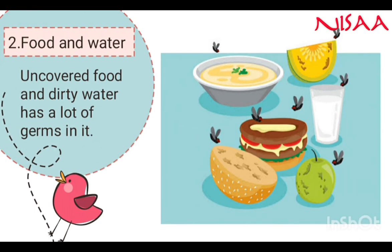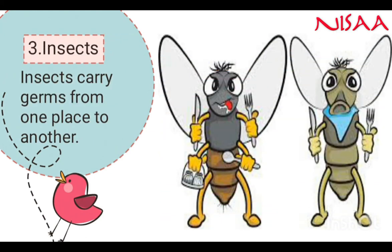Number 2: Food and water. A sick person sharing food and water with a healthy person causes the passing of germs. Also, if food and water is not covered properly, germs come and sit over them.